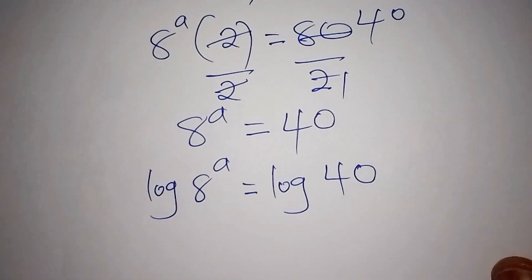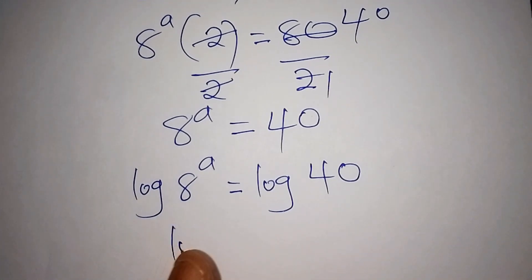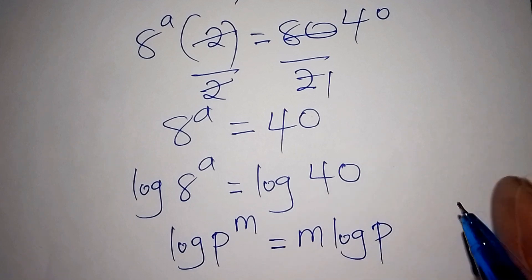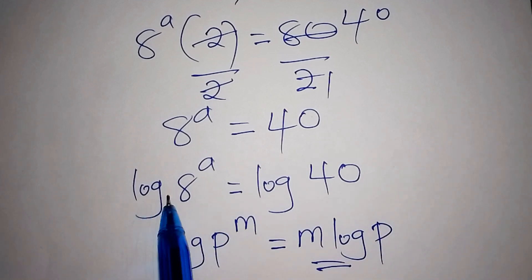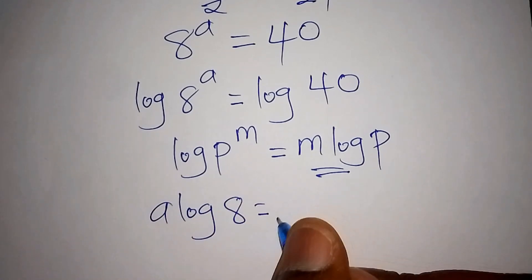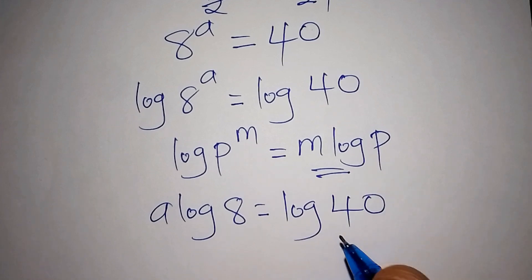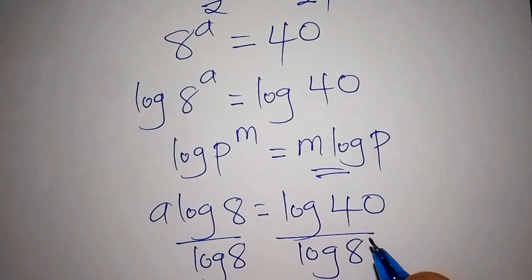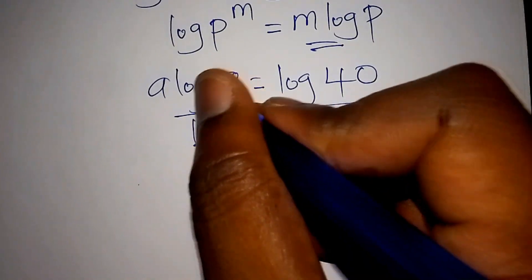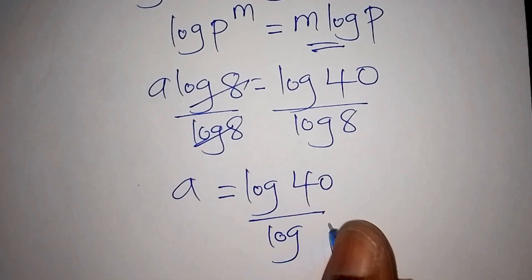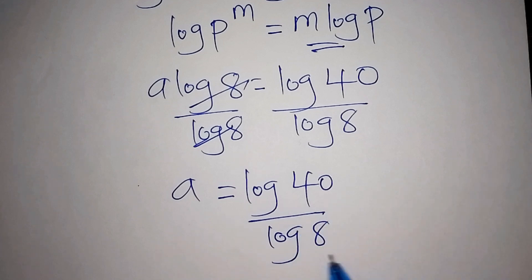We recall that log of P to the power of M can also be written as M times log of P. Using this rule, log of 8 to the power of A becomes A·log 8, so A·log 8 equals log 40. We then divide both sides by log 8, and log 8 cancels, giving us A equals log 40 over log 8.